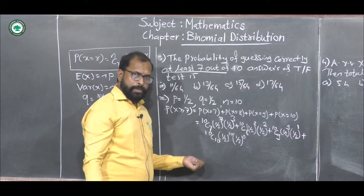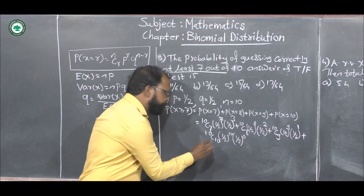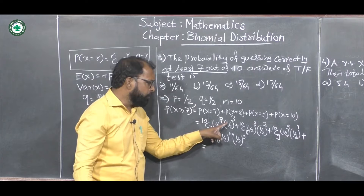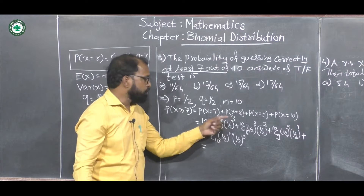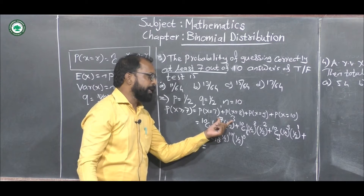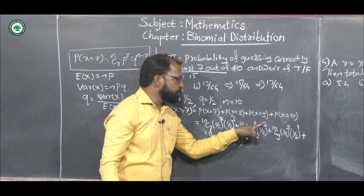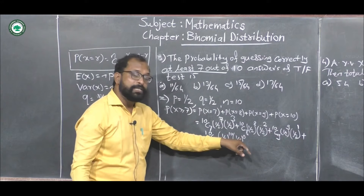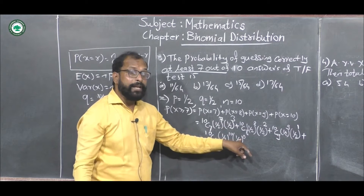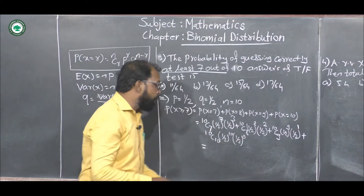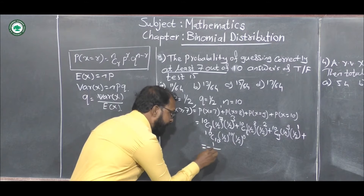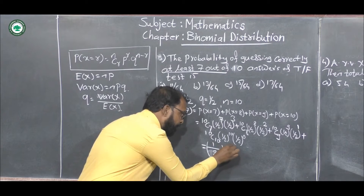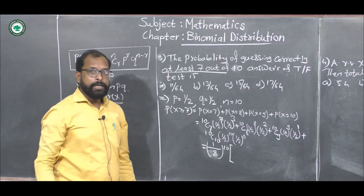To simplify, observe that in each term the exponents of 1/2 add up to 10: 7+3=10, 8+2=10, 9+1=10, and 10+0=10. So we can take (1/2)^10 as a common factor, and write (1/2)^10 into a bracket.